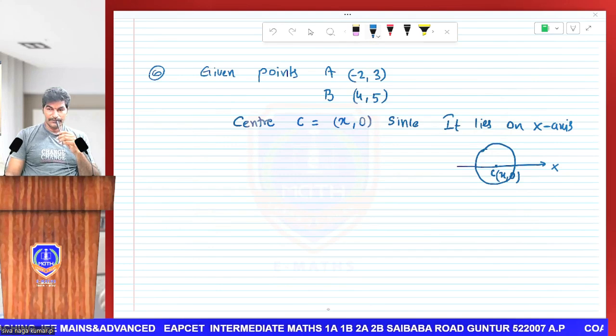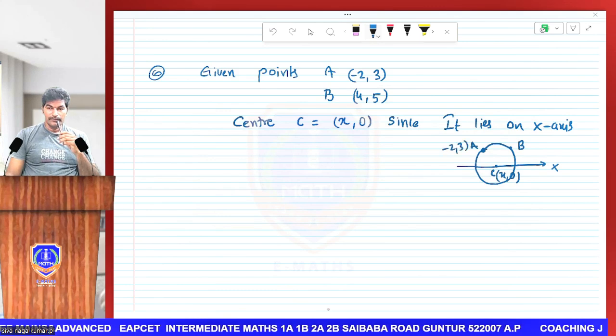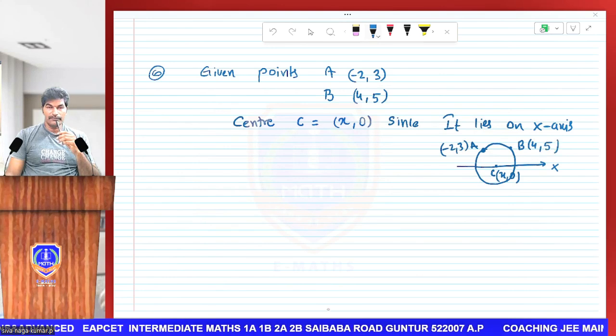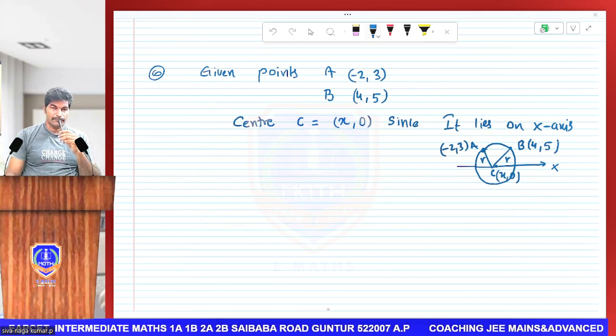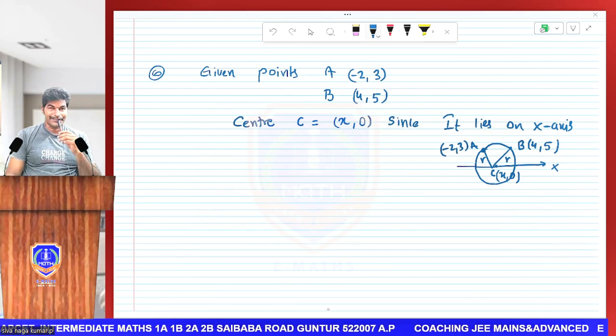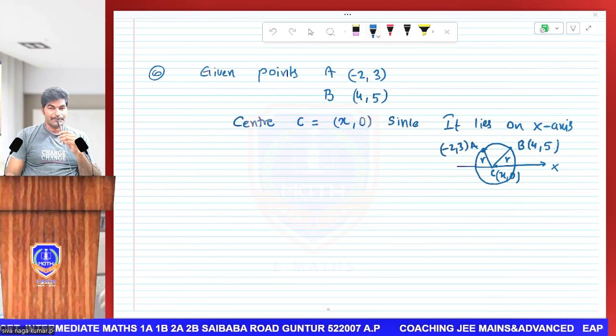x comma 0, point A, point B. A is (-2, 3), B is (4, 5). And you know that the radius will be same, right, for a circle. Radius is same, so.